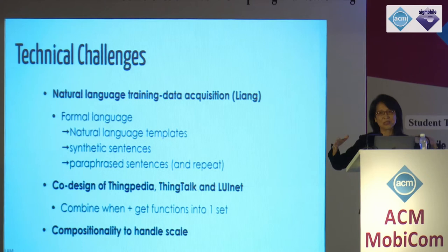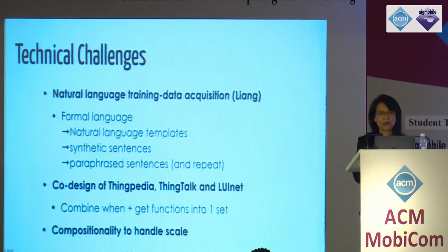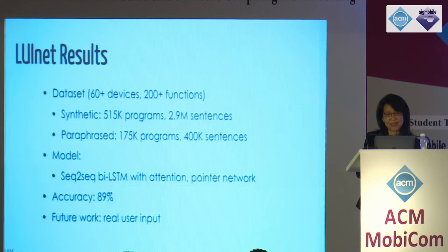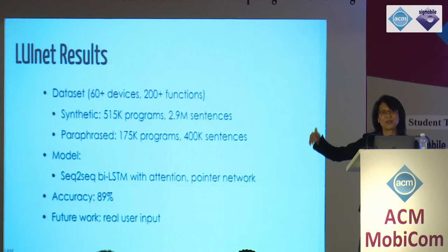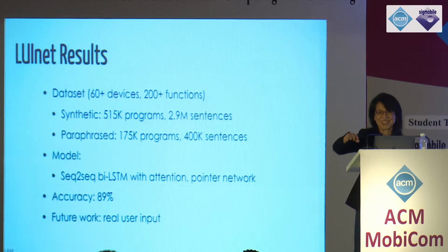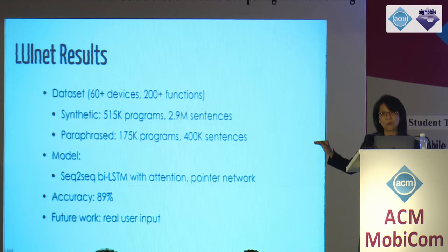The third very tricky part is compositionality. Even with a simple grammar, there are a lot of programs you can compose, so you have to design a system that handles compositionality. We are very happy to say that after all this work, we have collected a very good dataset — we're going to make it available to everybody. Using a seq-to-seq LSTM with attention pointer network, we are able to get accuracy up to 89%. We started at 20s, 30s, 60s, and this result shows that the problem will be solved.